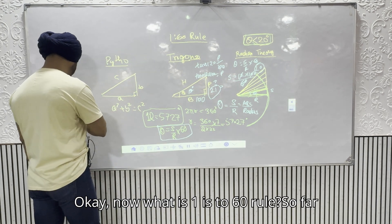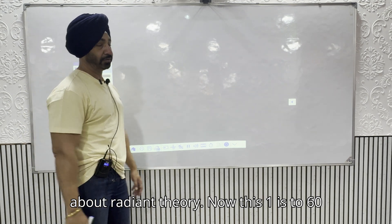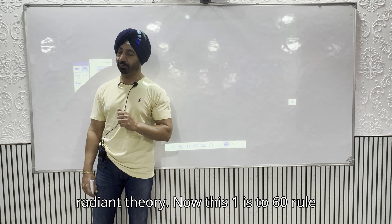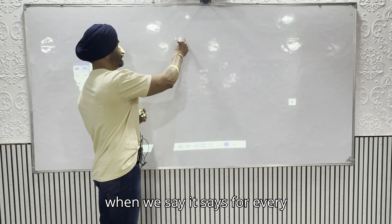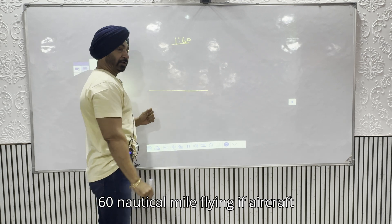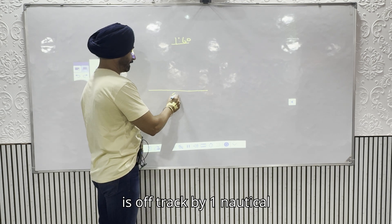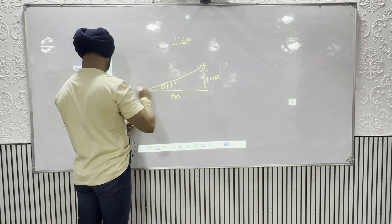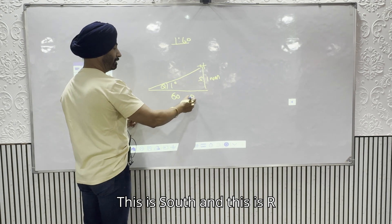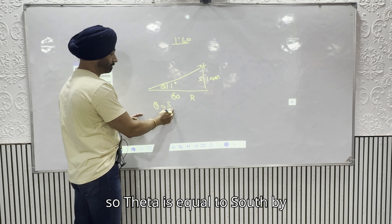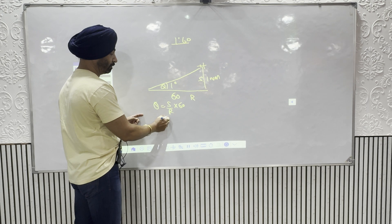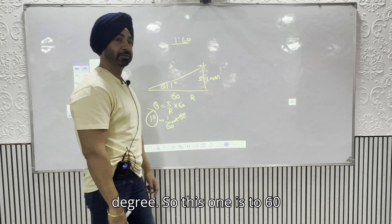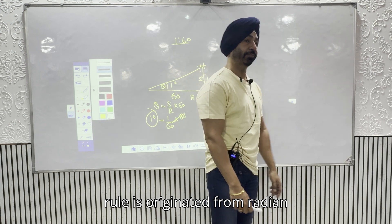So what is the 1-in-60 rule? It originates from radian theory. It states: for every 60 nautical miles flown, if the aircraft is off track by 1 nautical mile, the track error is 1 degree. Using theta = S/R × 60: S = 1 NM, R = 60 NM, so theta = 1 degree. As a pilot, that's the definition: 60 NM flown, 1 NM off track = 1 degree track error.